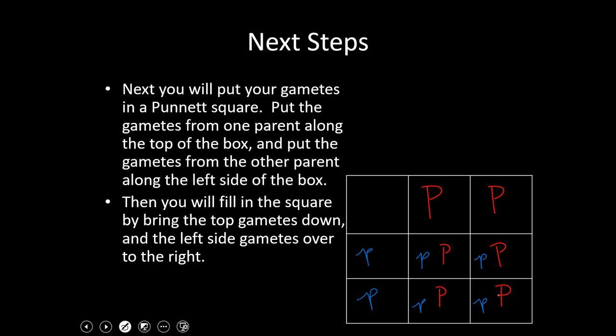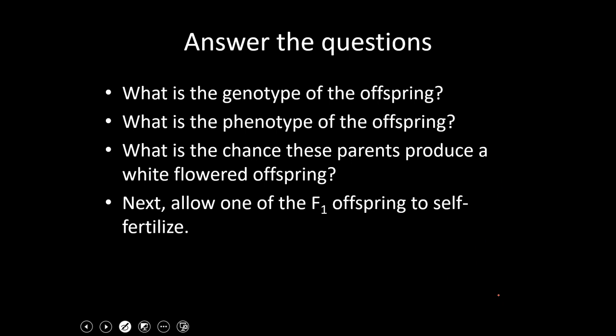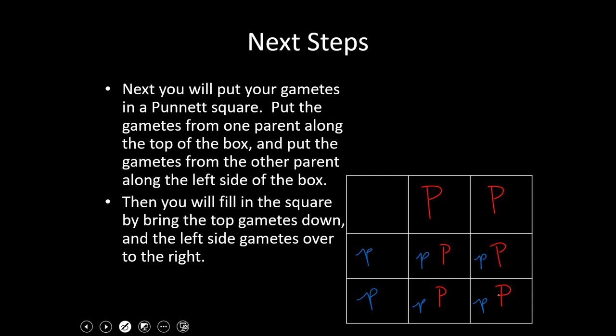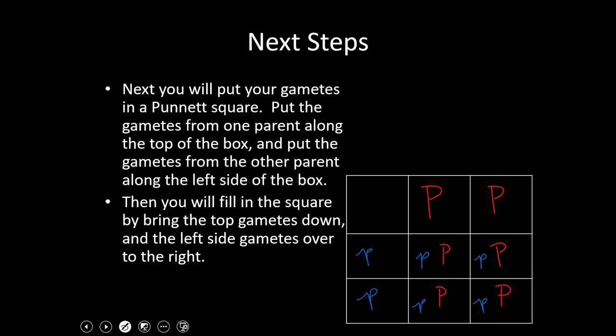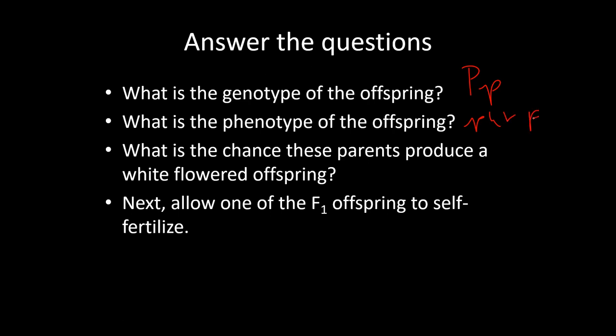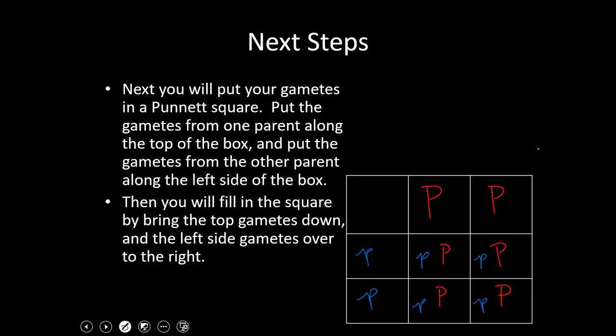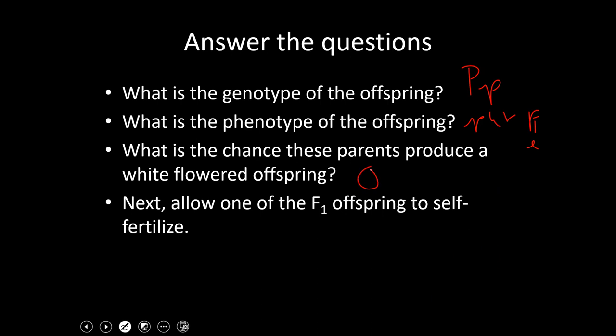We had already done this part last time. The question was: what do those flowers look like? Since capital P — purple flowers — is the dominant condition, every one of those offspring is going to produce purple-flowered plants. The genotype of the offspring is heterozygous — you could write 'heterozygous' or simply big P little P. The phenotype is purple. The chance these parents produce a white-flowered offspring? Looking at the Punnett square, none are white, so the chance is zero percent.